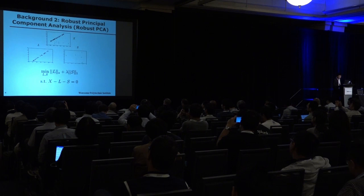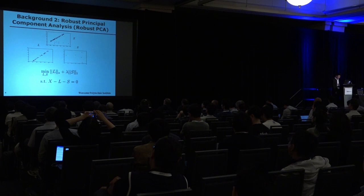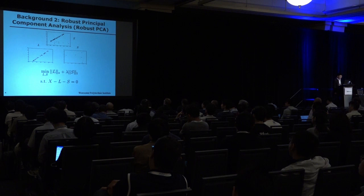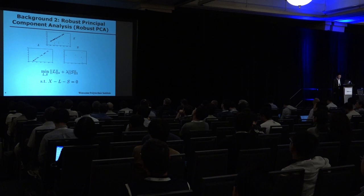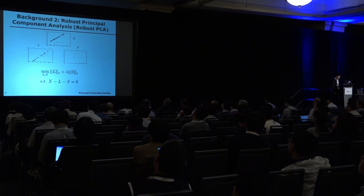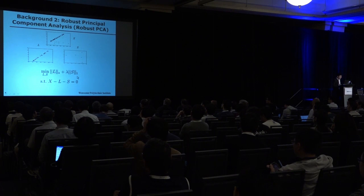For robust principal component analysis — robust PCA — it assumes that our data X contains anomalies and splits the data into two parts, L and S, where L can be accurately projected onto a linear subspace, and S contains anomalies. We want to minimize the rank of L and the sparsity of S. The nuclear norm and the L1 norm are convex relaxations of low-rank and sparse constraints.